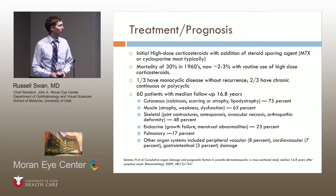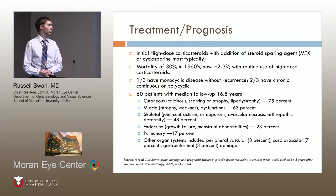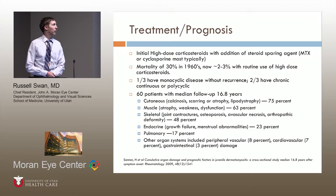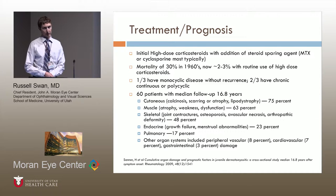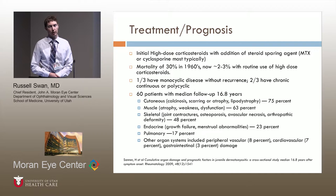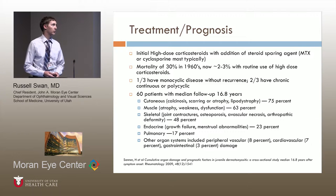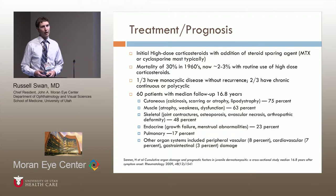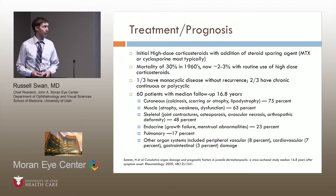The best long-term study looking at treatment and prognosis was by a group in Saner, with 60 patients followed for an average of approximately 16.8 years. There is significant systemic morbidity associated with the disease and its treatment. Mortality, which was as high as 30 percent in the early 1960s, has now decreased to approximately two to three percent with high-dose corticosteroids and immune-modulating therapy. Approximately a third of patients have monocyclic disease, while the majority have either a chronic continuous or polycyclic course.